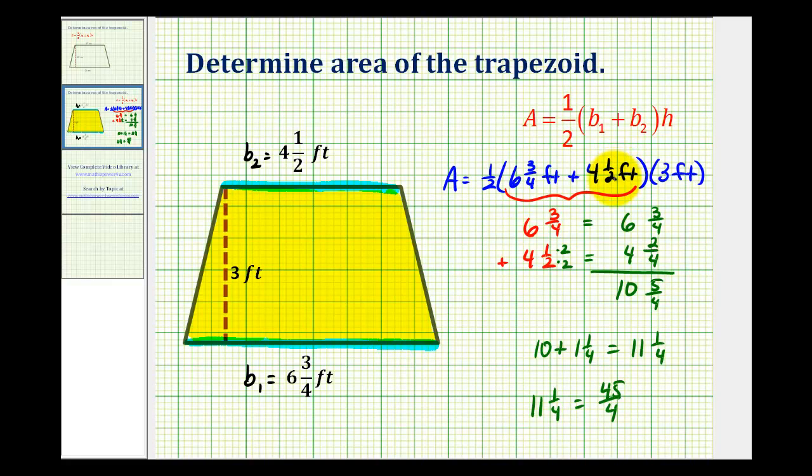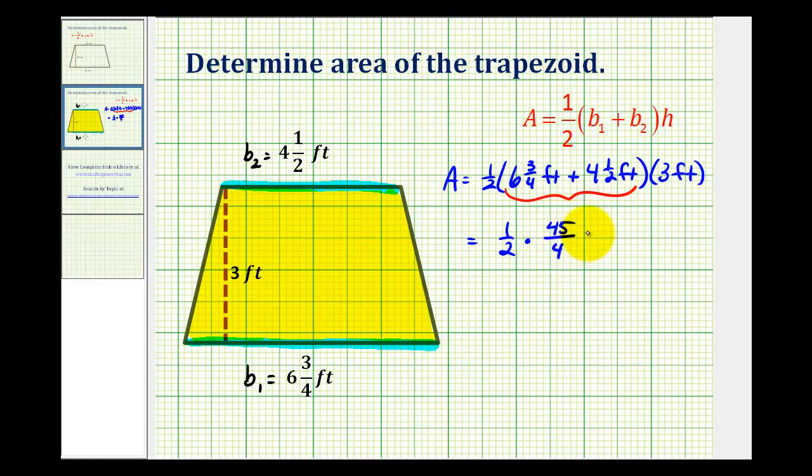So let's go ahead and rewrite this product. So we'll have one half times forty-five fourths feet times three over one feet. Notice how there are no common factors between the numerator and denominators. So this is not going to simplify.